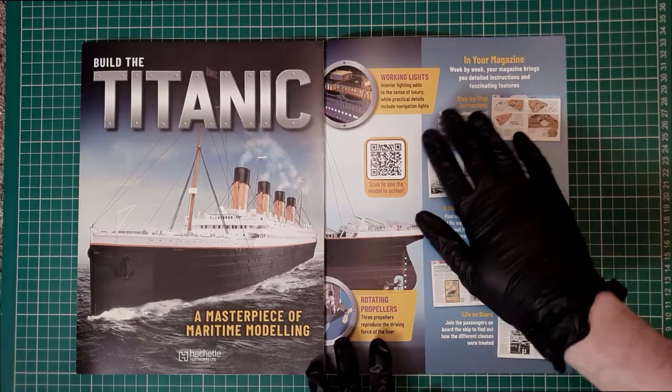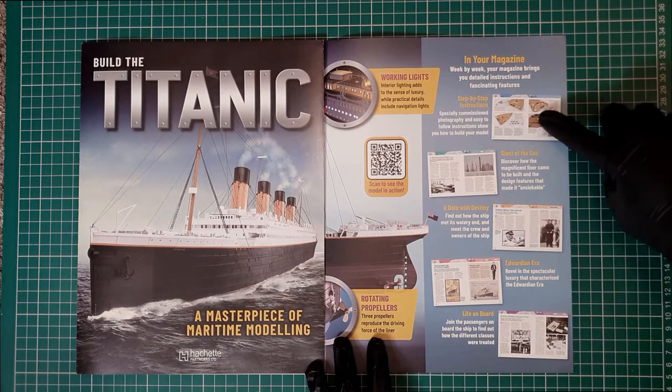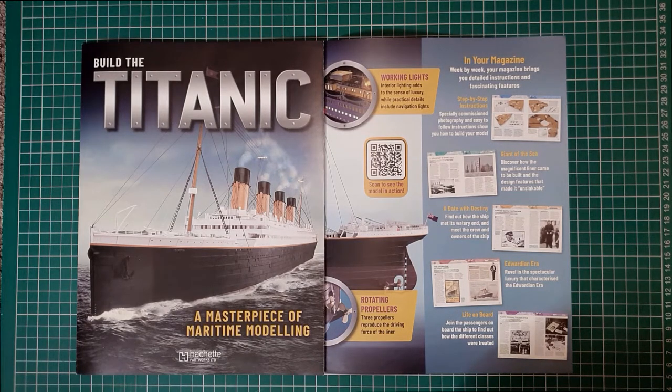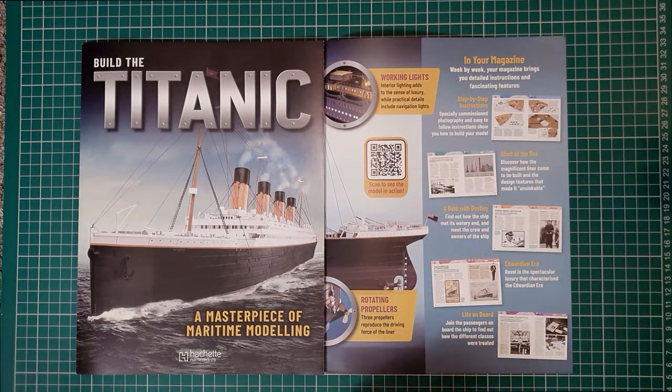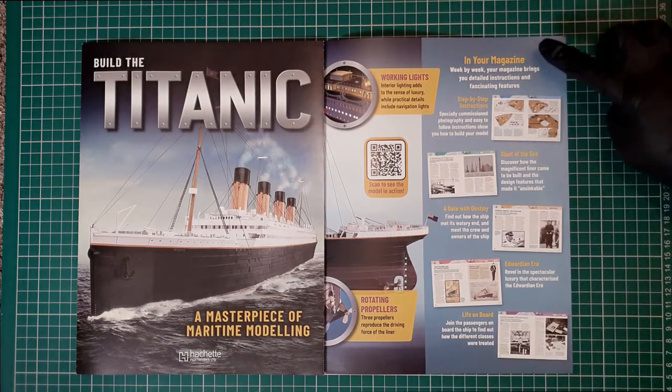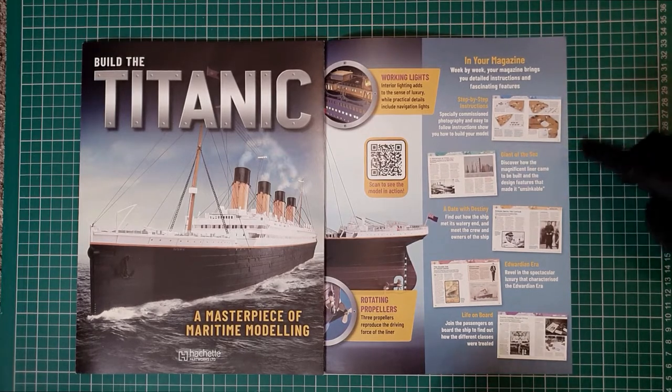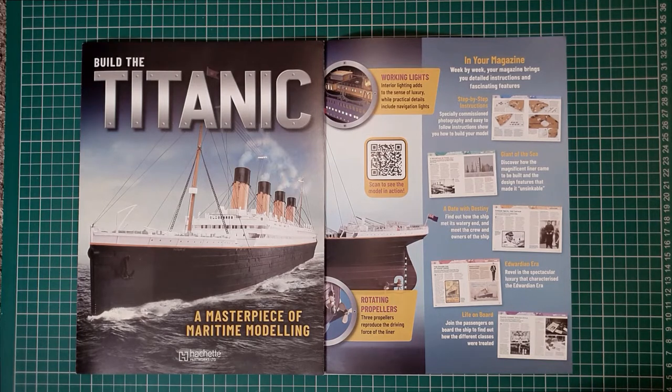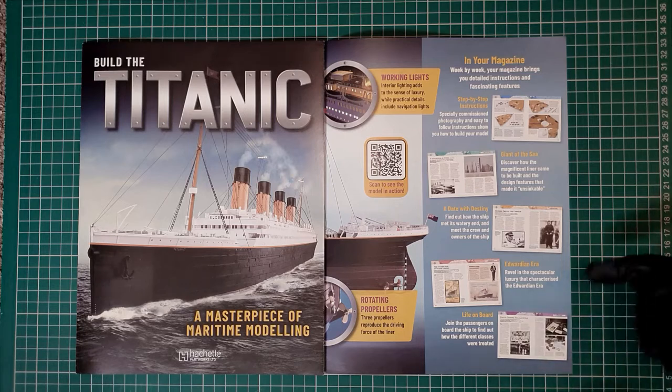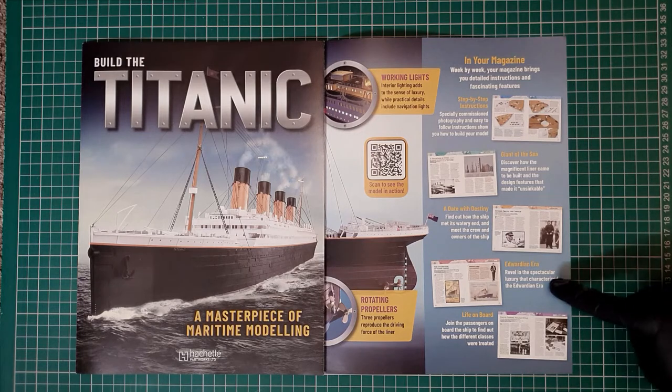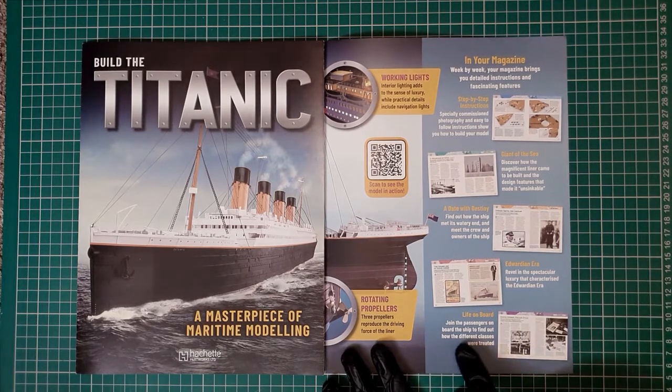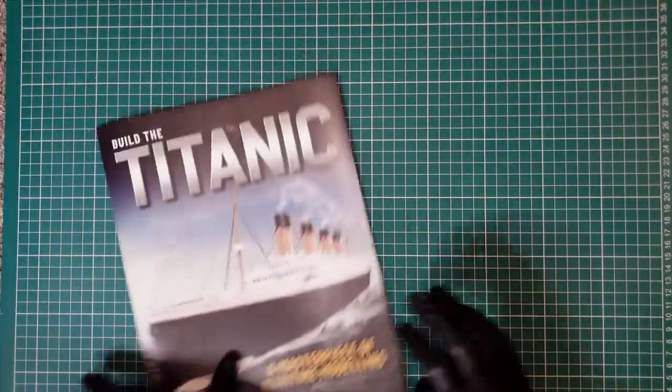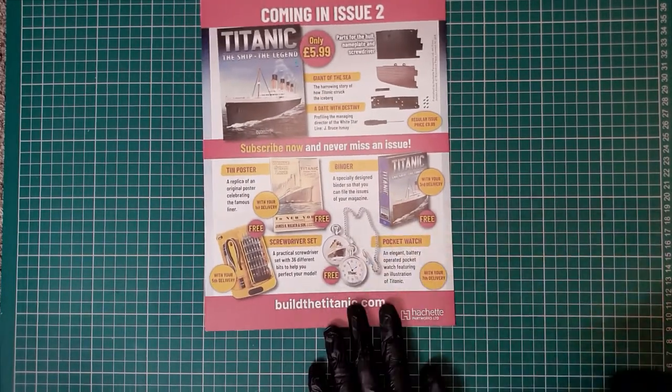In this section it tells you what you get in your magazine. You get step-by-step instructions. The Giant of the Sea, which discovers how the magnificent liner came to be built. Design features that made her unsinkable. A date with destiny to find out how the ship met her watery end and meet the crew and the owners of the ship. The Edwardian Era, revel in the spectacle of luxury that characterized the Edwardian era. And life on board, join passengers on board to find out how the different classes were treated. Just a nice little breakdown there and how everything sort of comes together. On the back you've got your issue two and you always get subscription bonuses if you do choose to subscribe to the model.